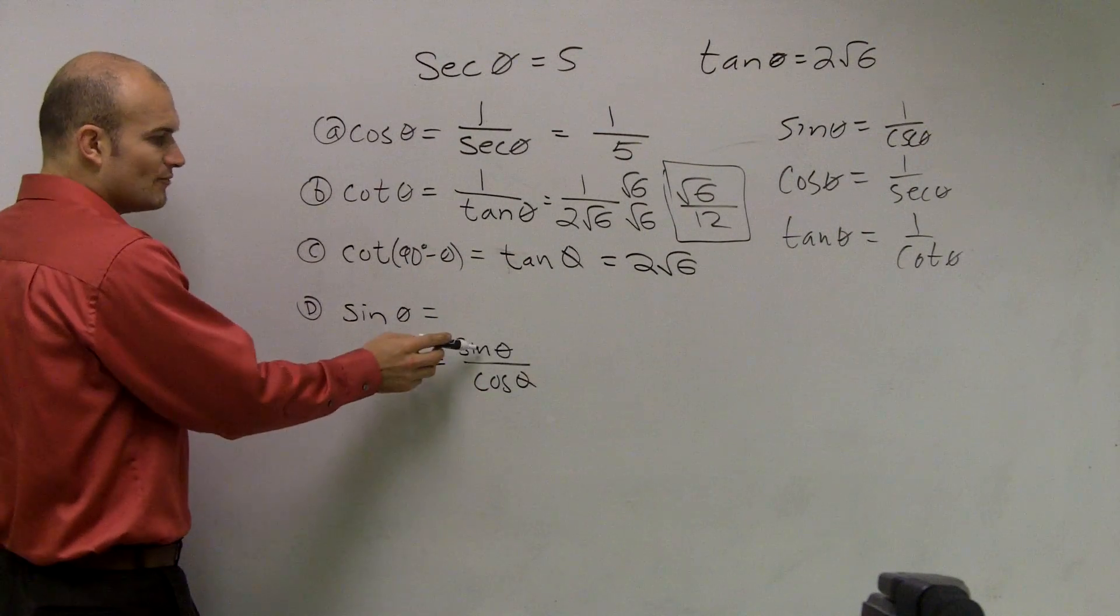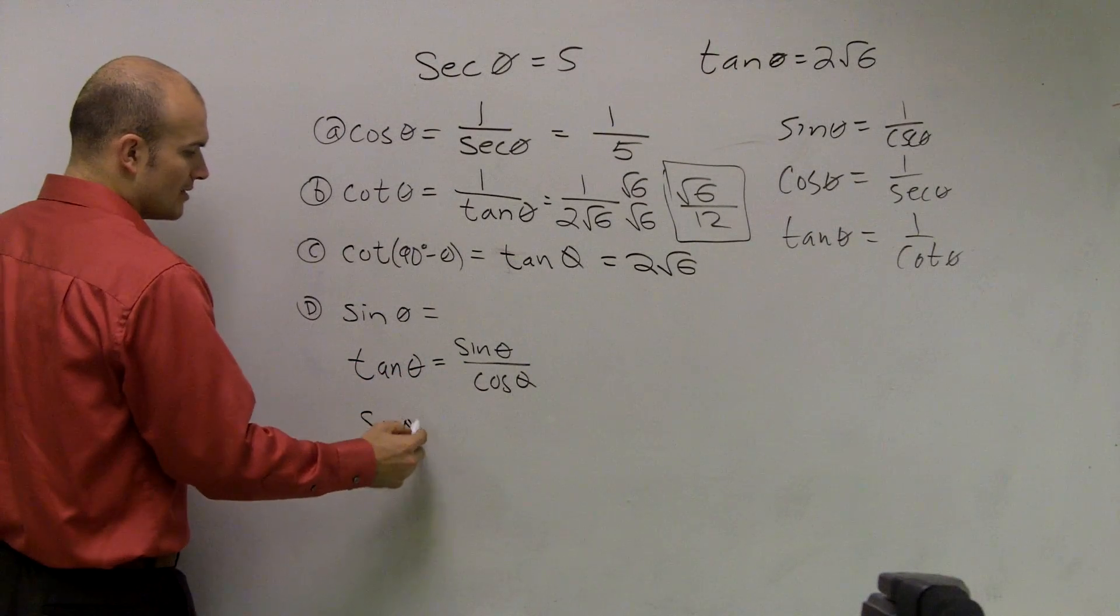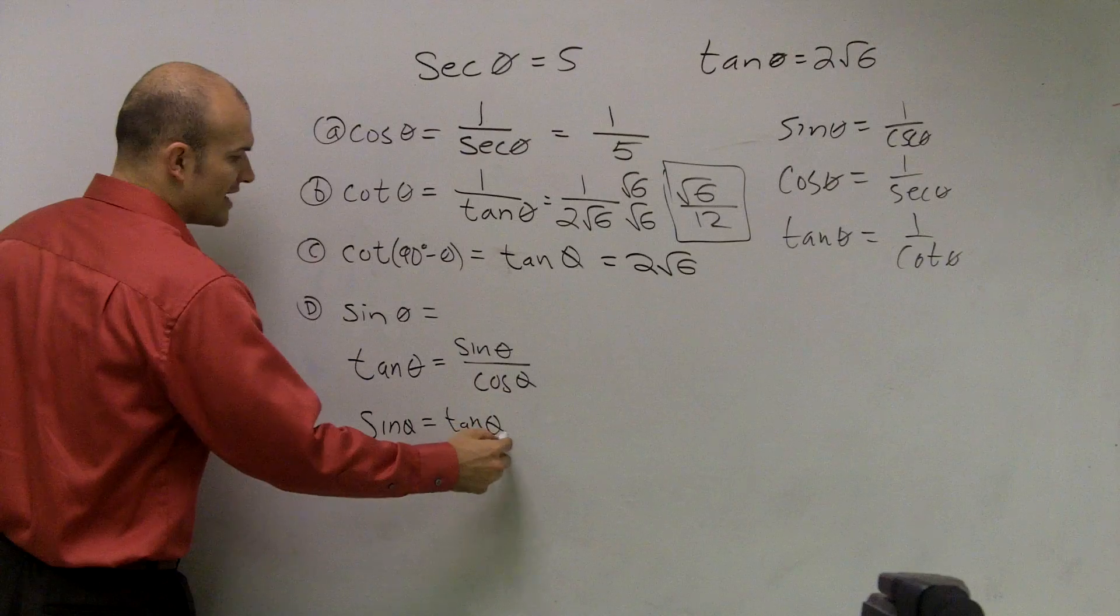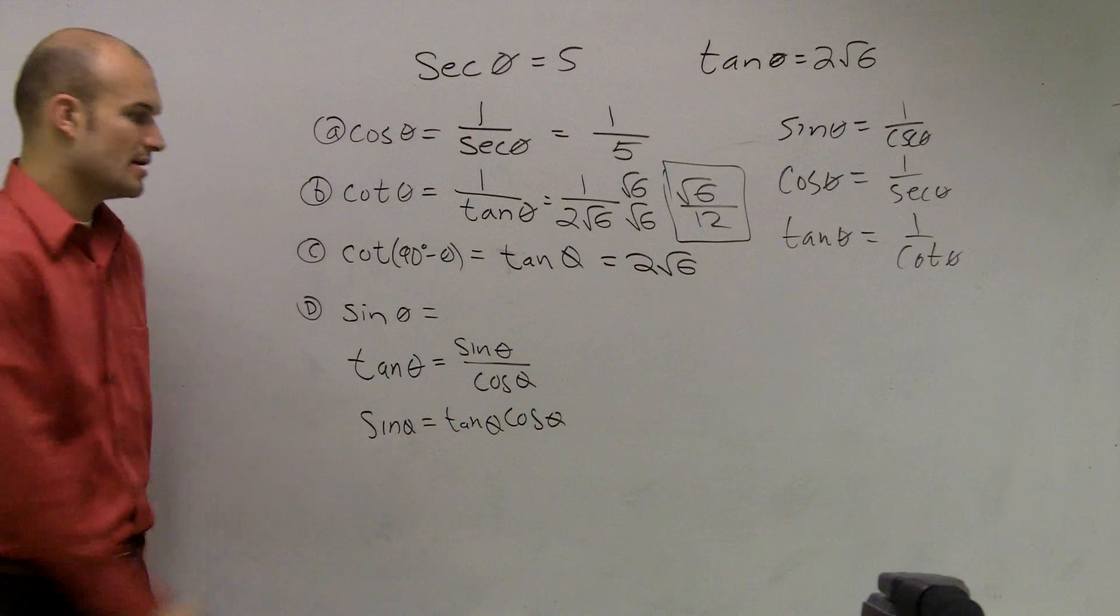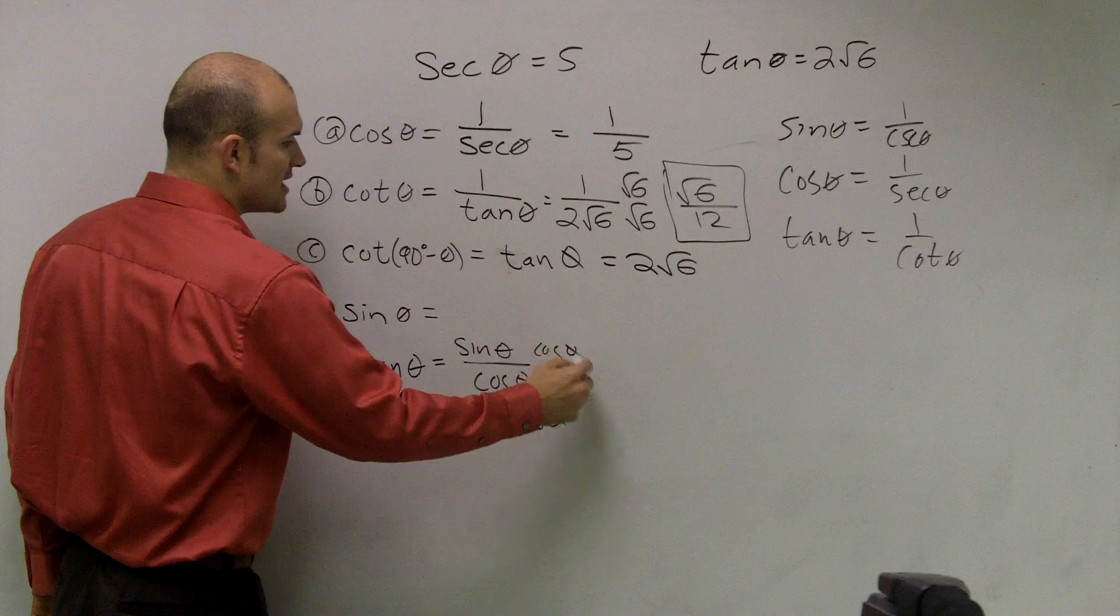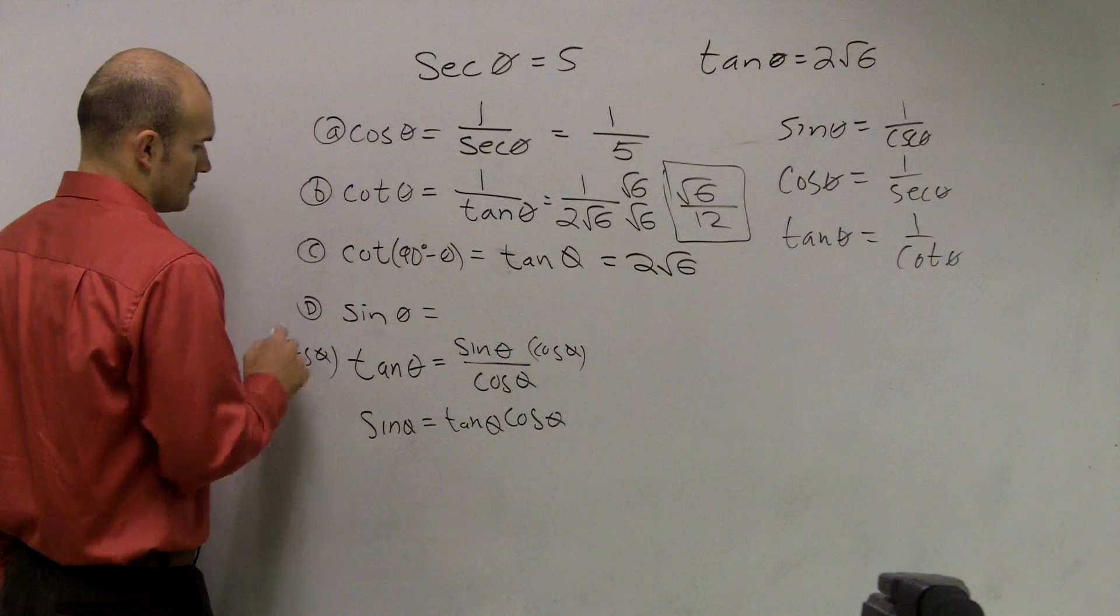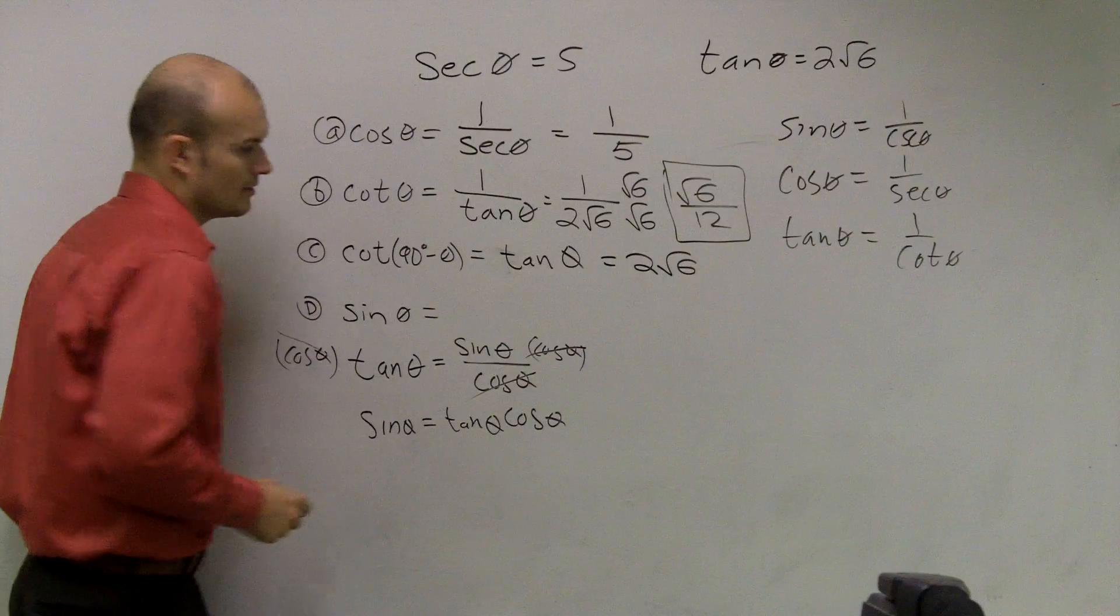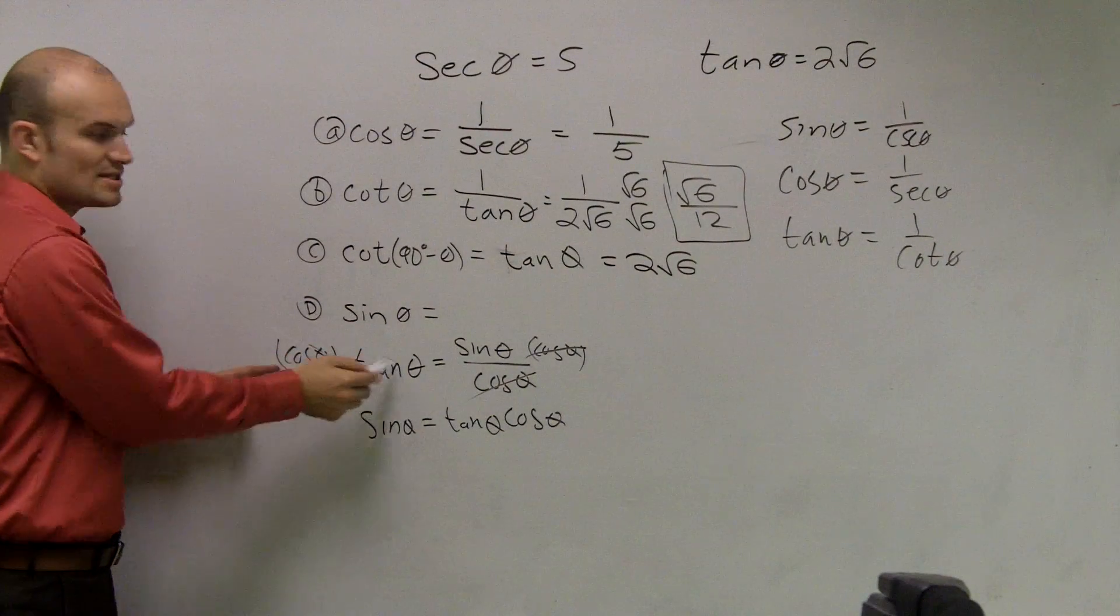And the important thing, if I want to know what sine is, I can say sine of theta is the same thing as tangent of theta times cosine of theta, right? You multiply by cosine of theta both sides. You get sine equals cosine times tangent.